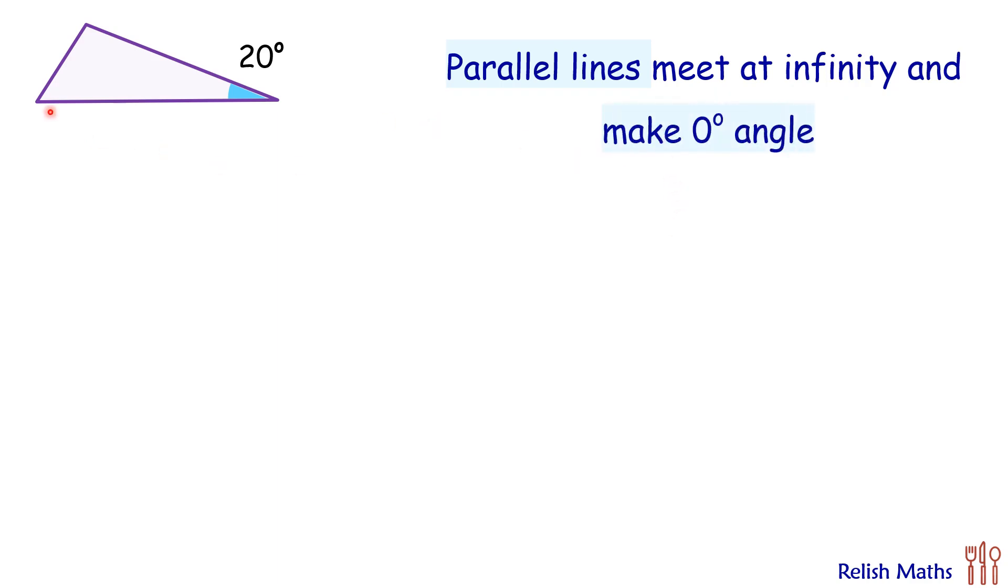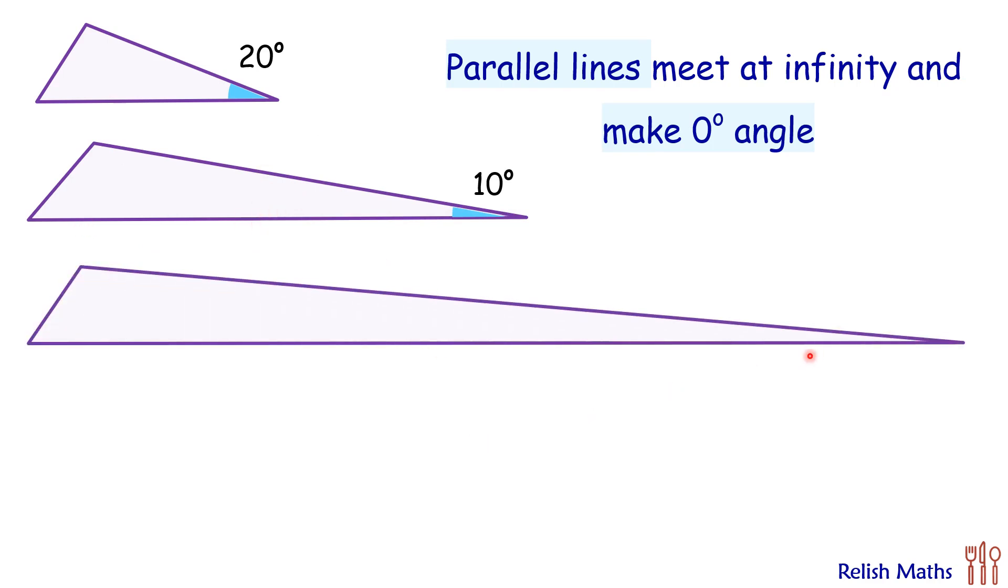So let's see here, we have this triangle with an angle of 20 degrees. Now if I keep this base same and extend these two other sides, they are meeting far away. And here this angle instead of 20, let's say will be 10 degrees. And how about if I stretch these two lines further? So they will make a smaller angle. And let's say here in this case, this angle is 5 degrees.